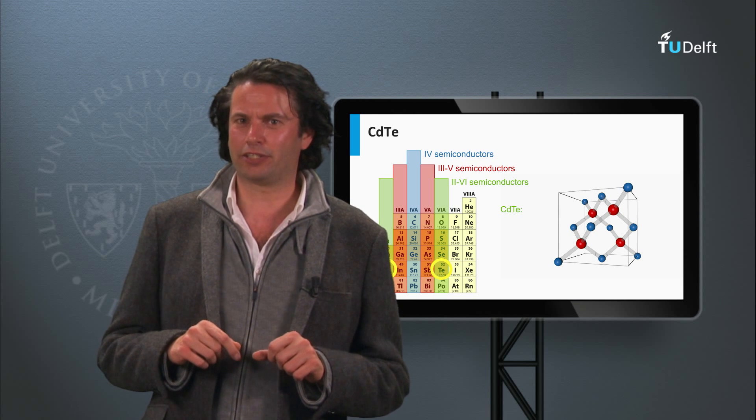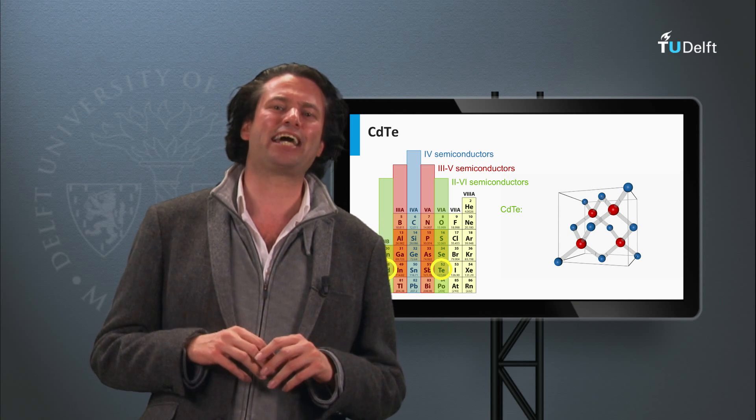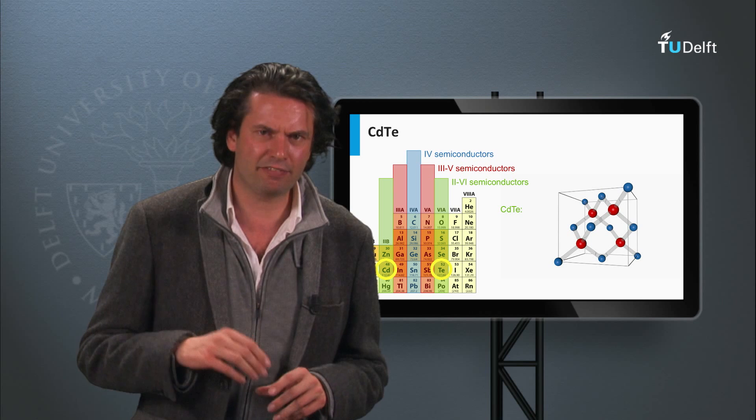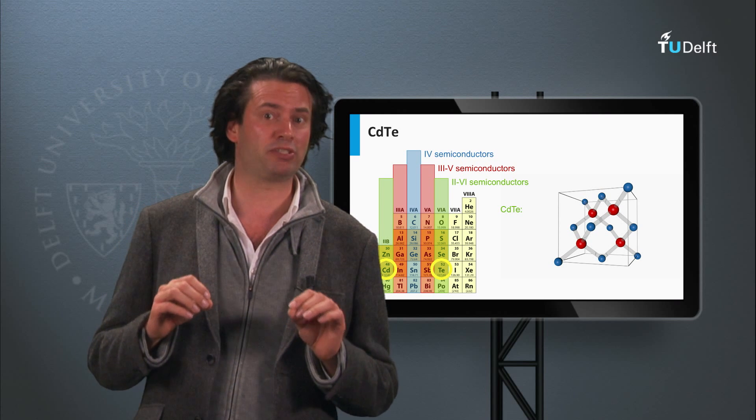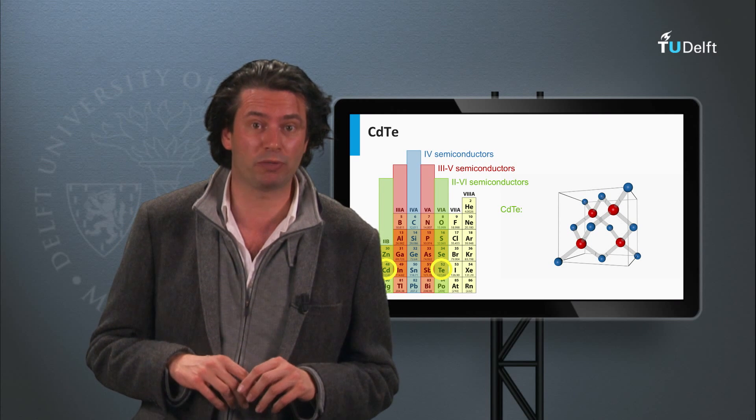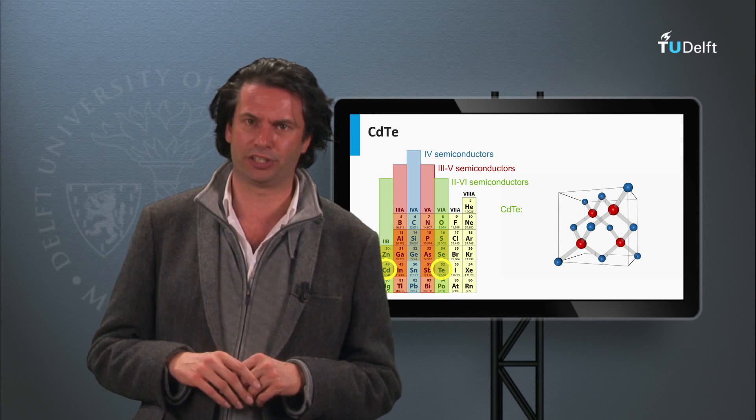A third thin film technology we will discuss is cadmium telluride. This thin film technology has currently demonstrated the lowest cost price per watt peak among all PV technologies.